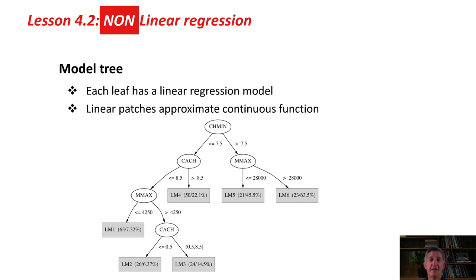That's linear regression. I'm actually going to look at non-linear regression here. A model tree is a tree where each leaf has got one of these linear regression models. We create a tree like this, and then at each leaf we have a linear model, which has got those coefficients. It's kind of like a patchwork of linear models. This set of, in this case, 1, 2, 3, 4, 5, 6 linear patches approximate a continuous function.